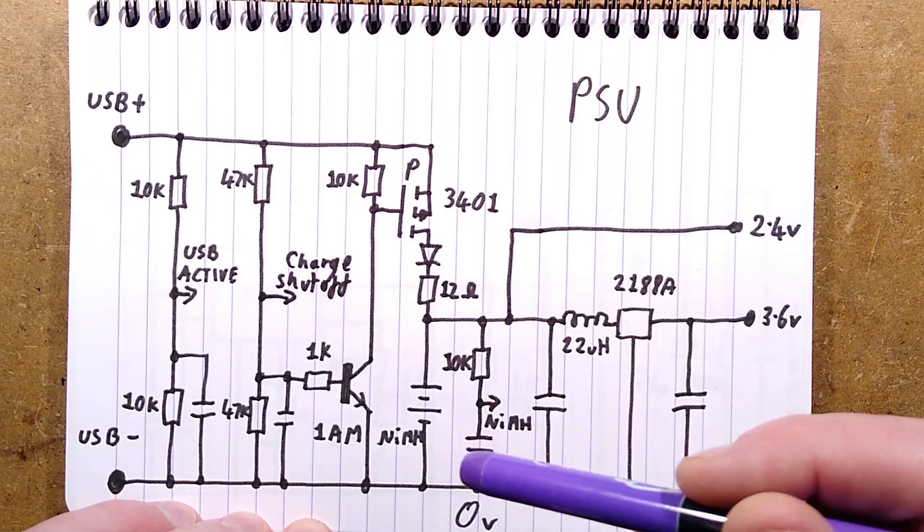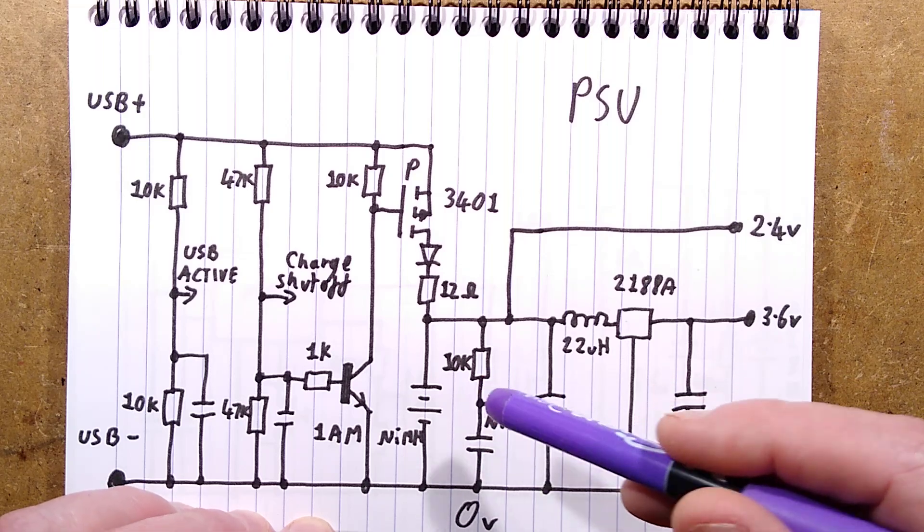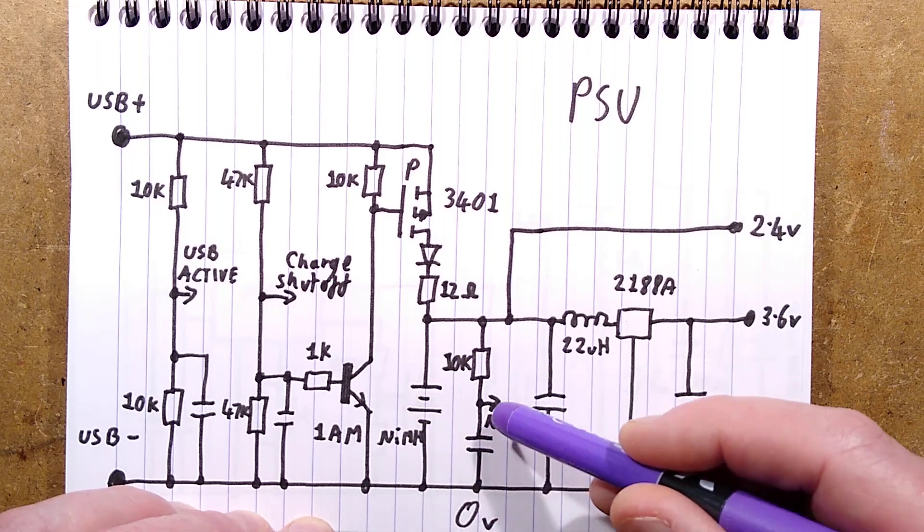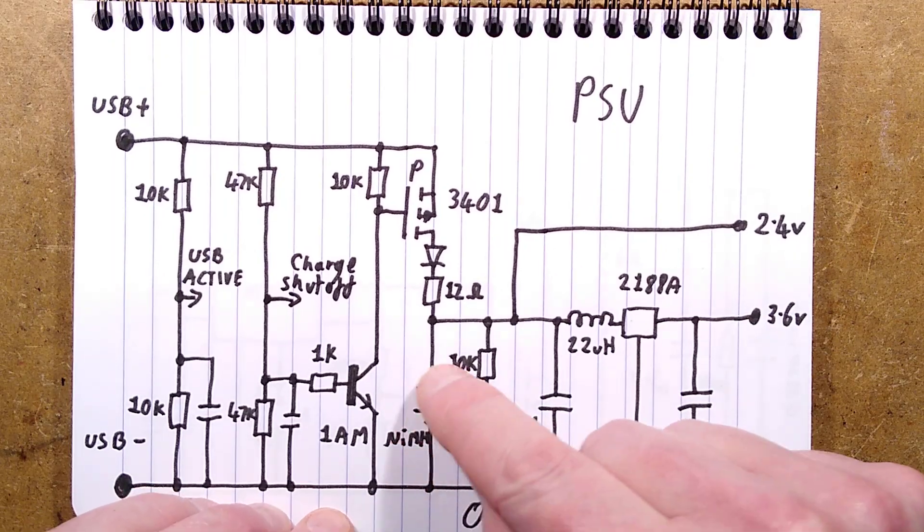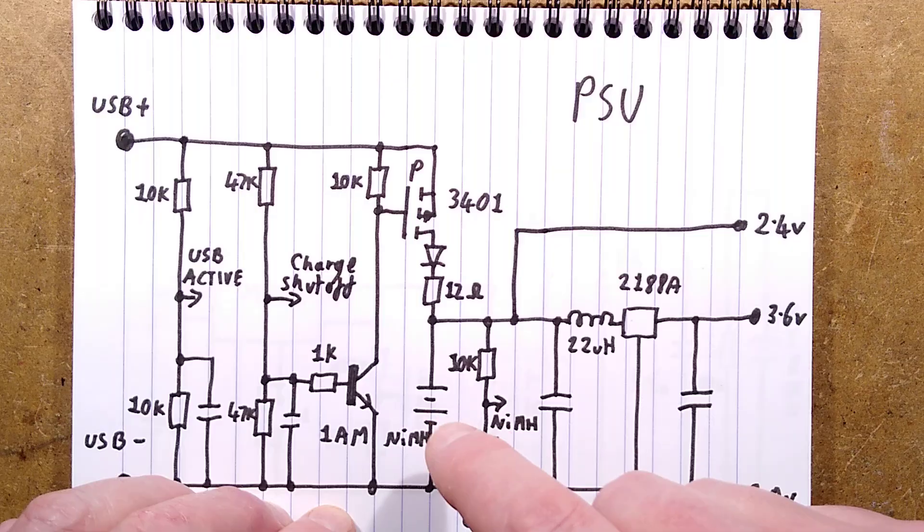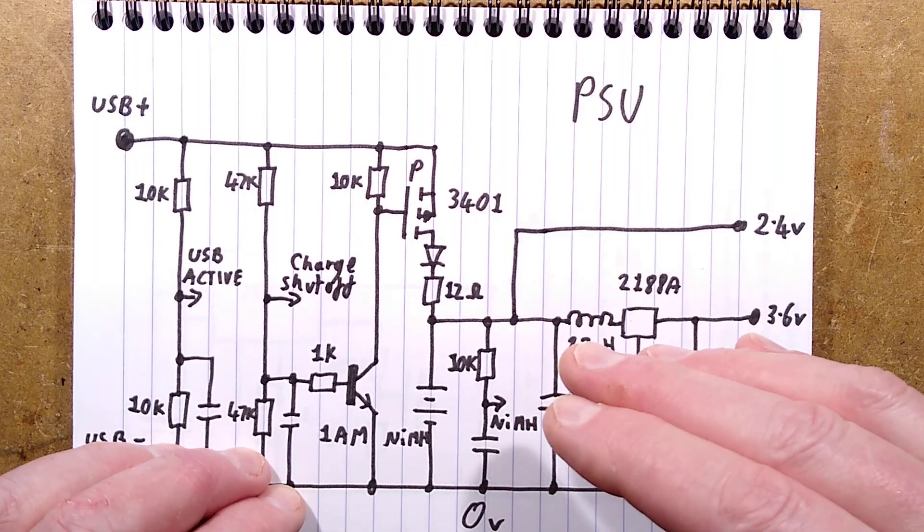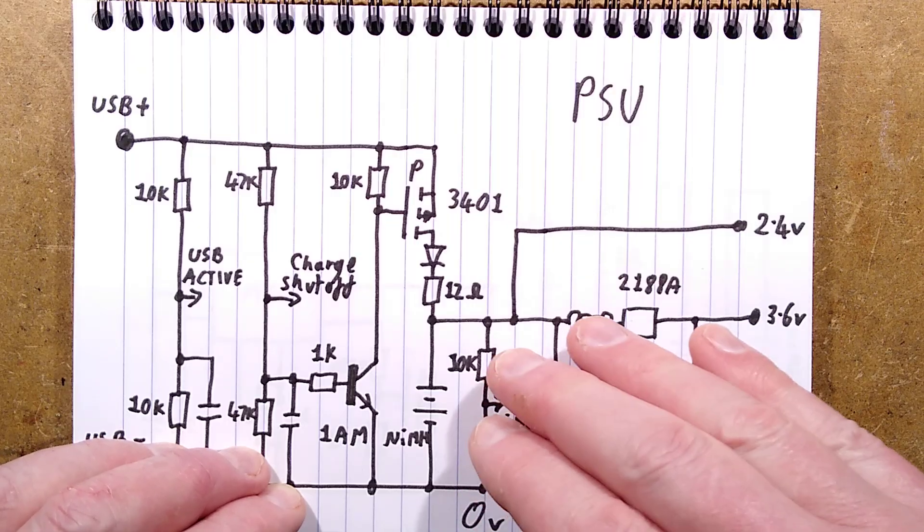Now, it's worth mentioning, when you charge nickel metal hydride cells, they can be trickle charged on an ongoing basis. Normally, the way you'd charge them is you'd look for negative delta V. The voltage gradually increases and then it suddenly dips down again as the electrolyte bubbles form in the plates. It's not like lithium cells where you get a nice decisive voltage that tells you whether it's charged or discharged.